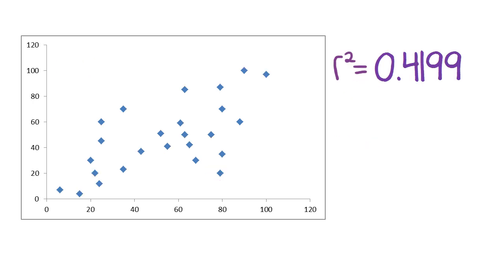Let's do one more of those. Here's a scatter plot that has a coefficient of determination of 0.4119. What is the product moment correlation coefficient to two decimal places?